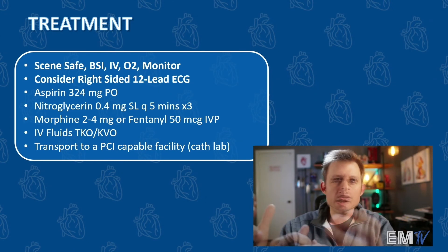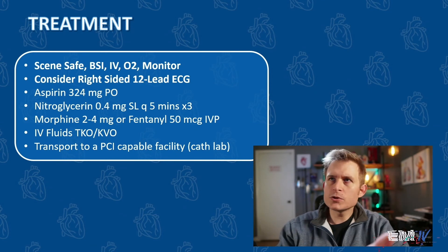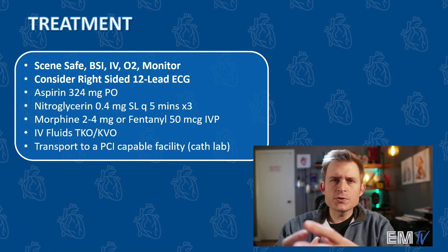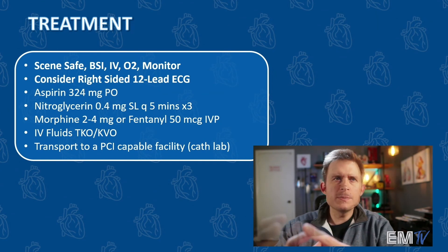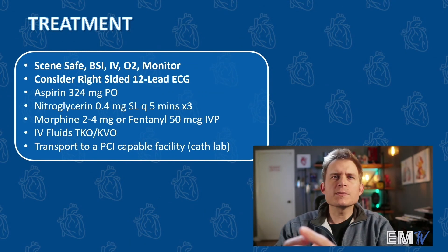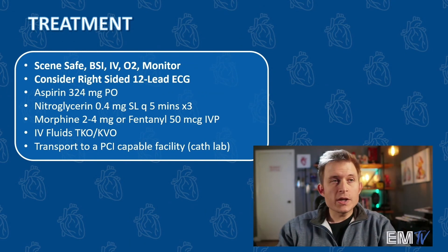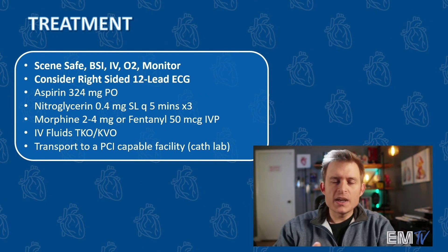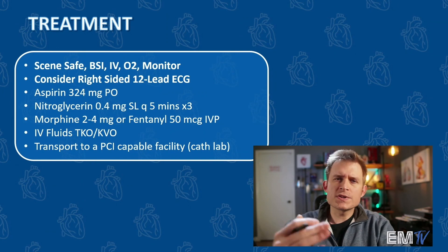I'm then going to proceed with typical ACS protocol — MONA or FONA protocol depending on what drugs you use. I'm going to give aspirin 324mg PO, nitroglycerin 0.4mg sublingual every 5 minutes with a maximum dose of 3. I could consider morphine 2-4mg IV or fentanyl 50 mcg IV push. I'll hang some fluids at a keep-vein-open rate, then transport the patient to a PCI-capable facility — one that has a cath lab — and that's very important to mention for the static cardiology card.